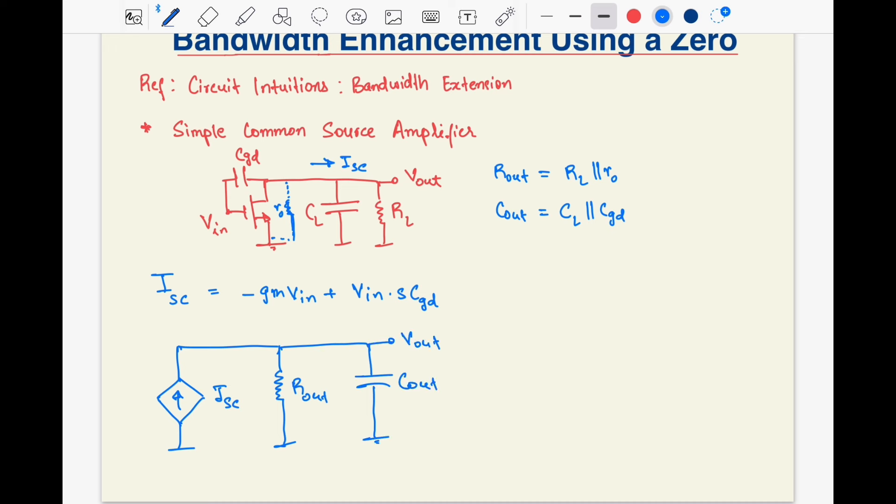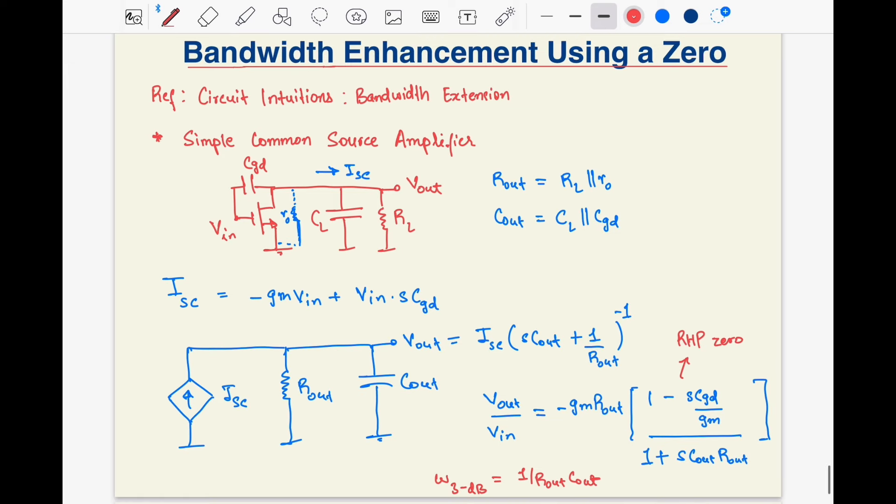We can observe the same kind of RHP0 as seen in Miller compensated op amps. We can also see that the 3 dB bandwidth is at omega equals 1 by Rout cout. Now the question is, how can we increase this bandwidth?